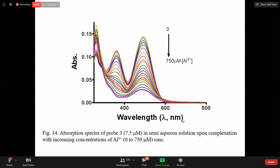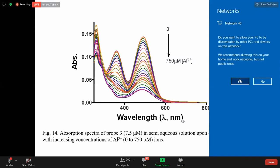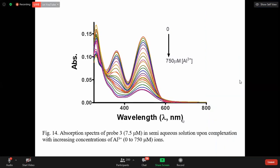This is the spectra for probe 3 with aluminum at different concentrations. When we add aluminum 0 to 750 micromolar, you can see the isosbestic point. When isosbestic point is observed, it confirms the complex or 1:1 complex formation of aluminum with probe 3.